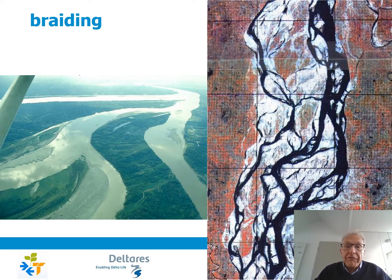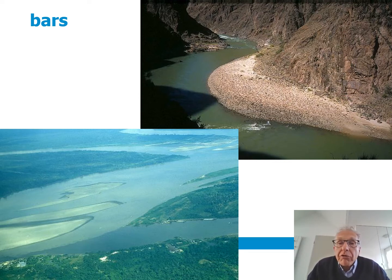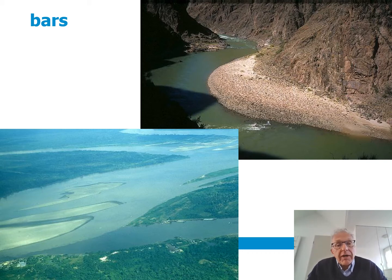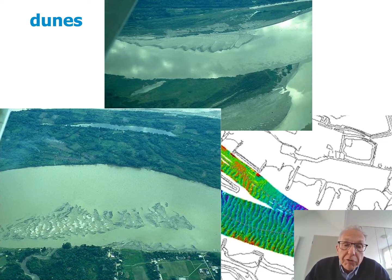We can also have braided rivers in which channels flow around islands and bars. Zooming in further, we see bars — bars that may be at the inner bend, like the one in the upper right corner in the Colorado River in the United States, or they may also be in the center like islands, as you see in the lower left corner in the Amazon River in Peru. Smaller features are dunes, superimposed on top of the bars.